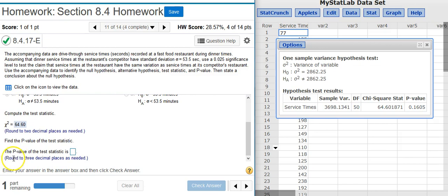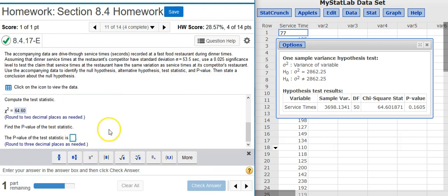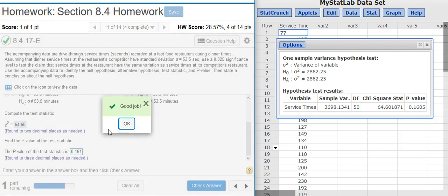The next part of the problem asks for the p-value, which we get by looking here at the last value here in the table. I'm asked to round to three decimal places. Good job!